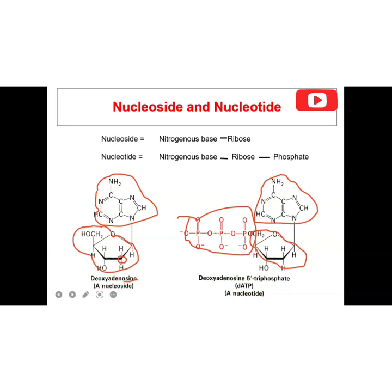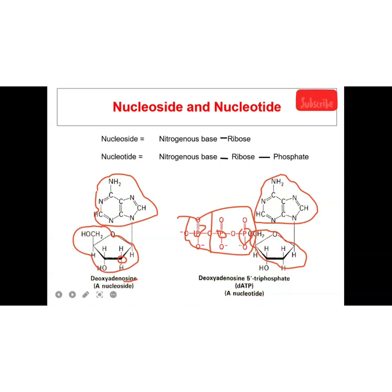The phosphate group is attached here — you can see there are three phosphate groups: the first, the second, and the third. That is why we call it adenosine triphosphate. Even with just one phosphate it is still a nucleotide. If we have only two phosphate groups it will be termed adenosine diphosphate. If it is only one phosphate group we say it is adenosine monophosphate.